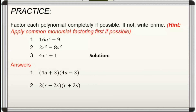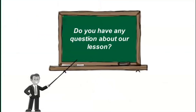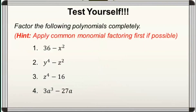For the last number, notice that it's a sum of two squares, so it's already prime or non-factorable. Do you have any questions about our lesson? If none, test yourself by answering the following. You may pause the video for a while to answer and comment down your answers when you are done. That's all for today, class. Goodbye!